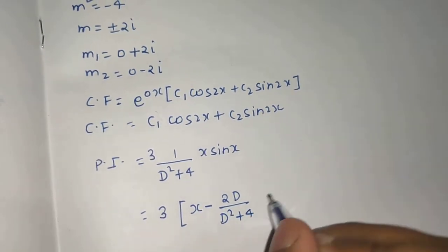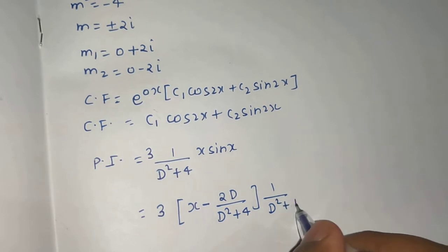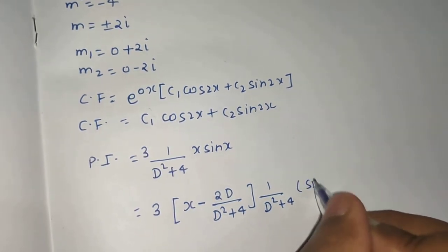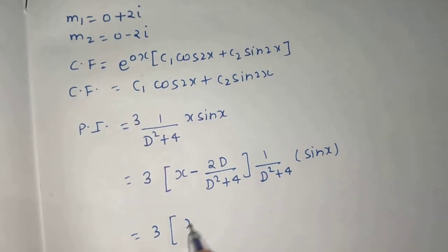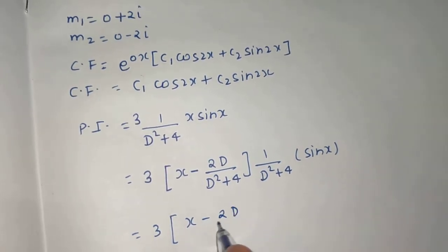1 upon D² + 4, and this will be operating on sin(x). So 3[x - 2D/(D² + 4)] × [1/(D² + 4)]sin(x).